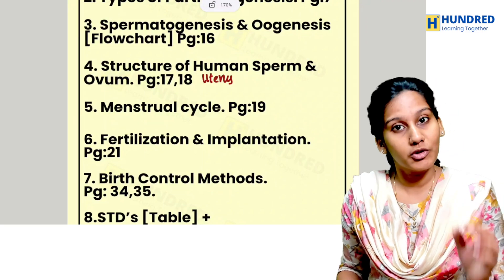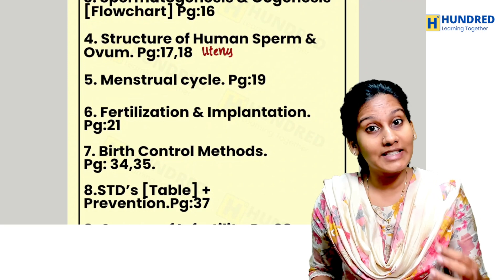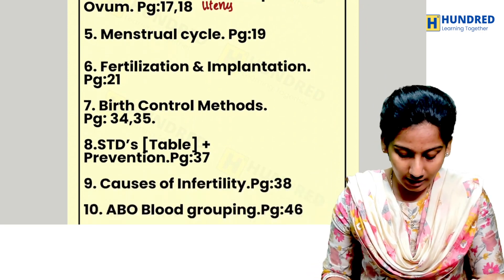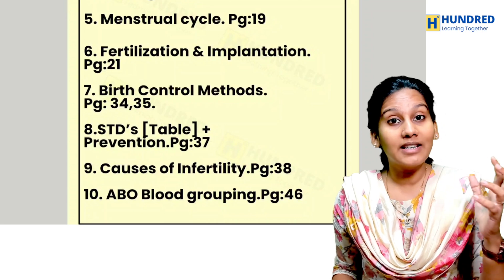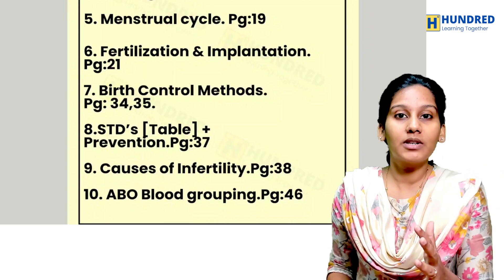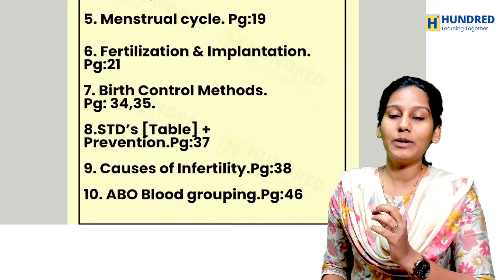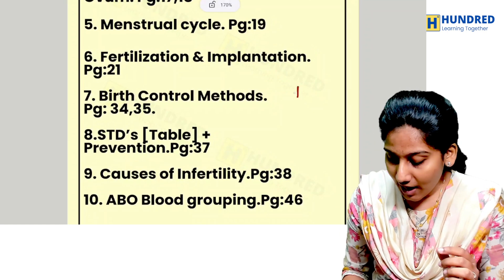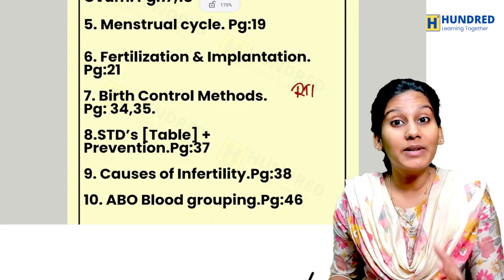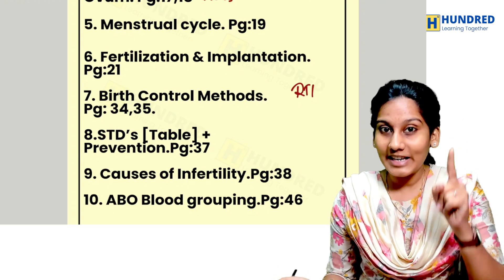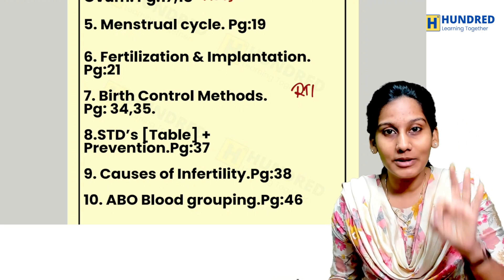Also cover the menstrual cycle, fertilization and implantation, birth control methods — all the methods — and sexually transmitted diseases. Study RTIs (Reproductive Tract Infections) from a table format for Chapter 3.